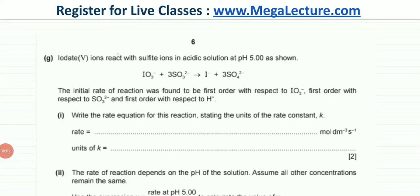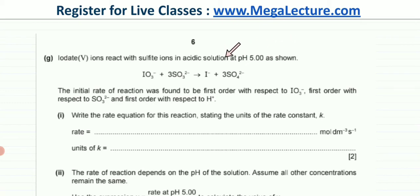The question states that iodate IO3⁻ ions react with sulfite SO3²⁻ ions in acidic solution at pH 5. This reaction is happening and the solution is acidic.